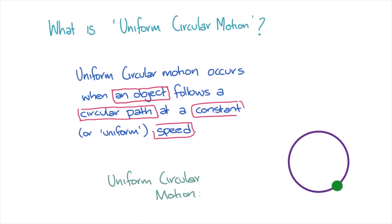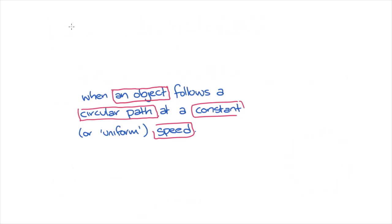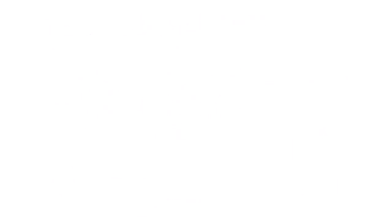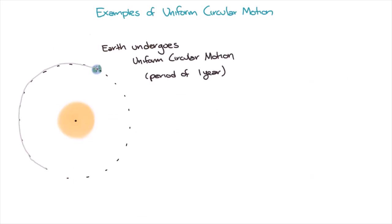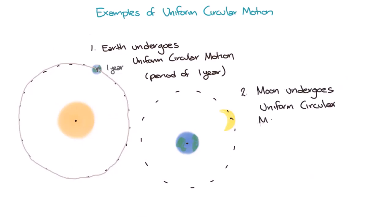There are lots of examples of objects that undergo uniform circular motion, or something very close to it. One example that might come to mind is the Earth, which orbits the Sun. One revolution around the Sun takes one year, or about 365 days. Another example is the Moon, which orbits the Earth, and takes about one month to complete one orbit.